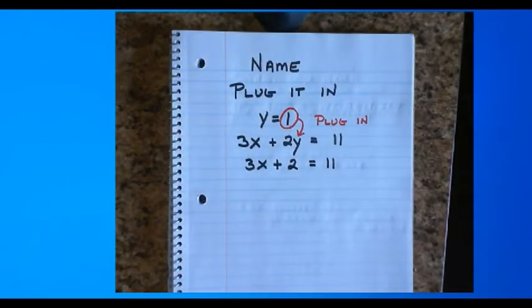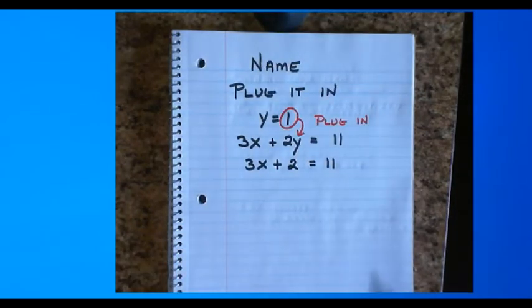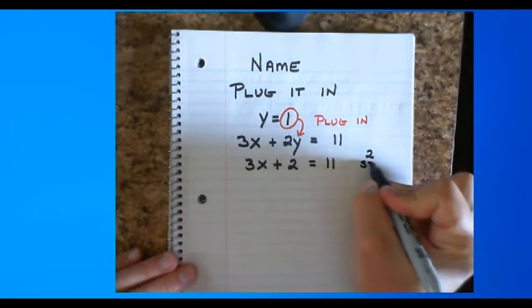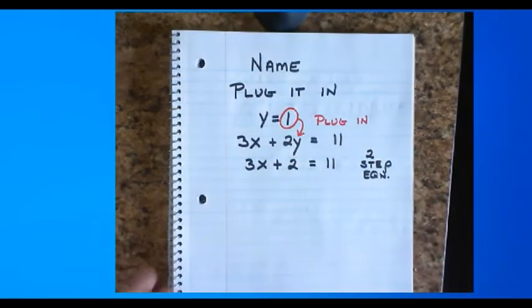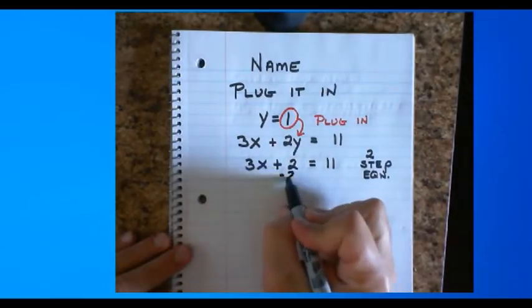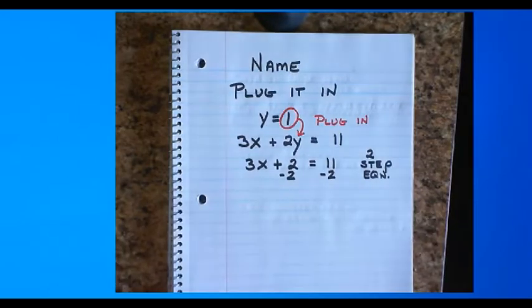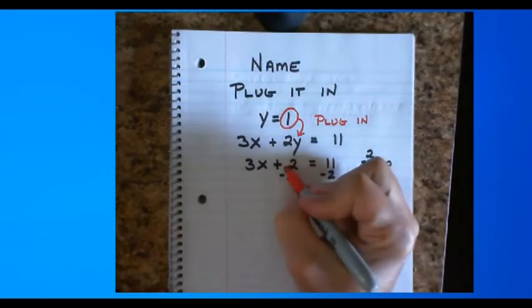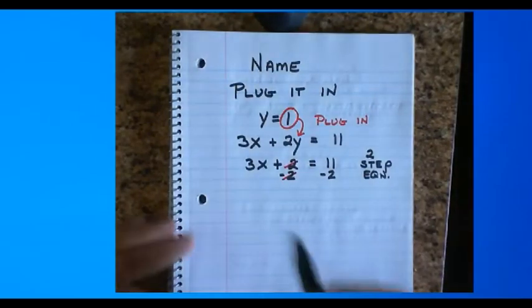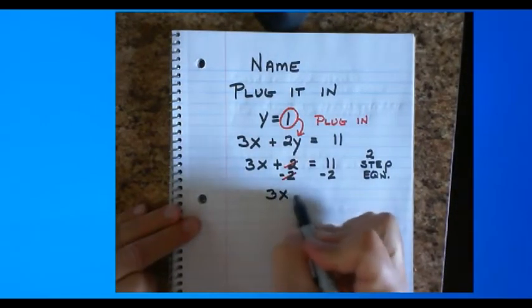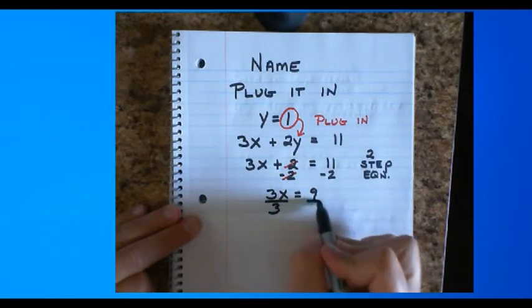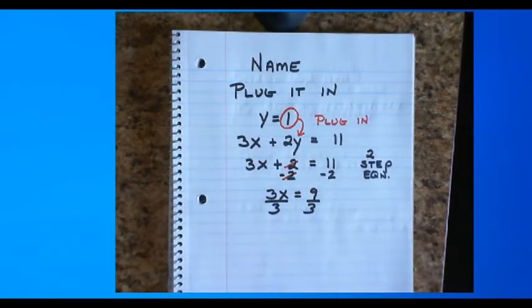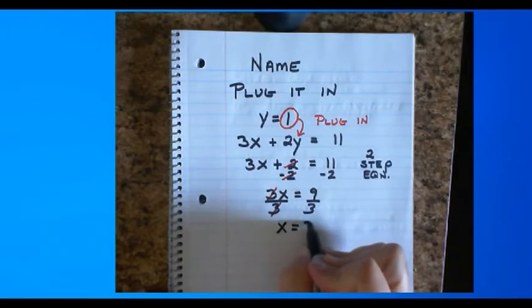And now, what I'm left with is a two-step equation. We're gonna solve a two-step equation. I'm gonna start by subtracting negative 2 from both sides. I'm gonna bust out my red marker of death and destruction. That leaves me with 3x equals 9. Dividing both sides by 3. Red marker of death and destruction. X equals 3.